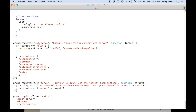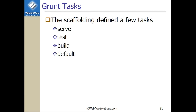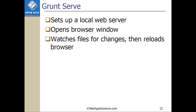We can see here we have registerTask. Serve, for instance, defines a task called serve. Now that we have a grunt file and the actual build system, what can we do with it? We'll take a look at a few sample tasks: serve, test, build, and default. Grunt serve is going to be a critical linchpin of our development. It's going to set up a local web server, which gets us away from having to use Apache or something else. It sets up a local web server, opens a browser window for us, and then sets up a watch — it watches files for changes and reloads the browser.